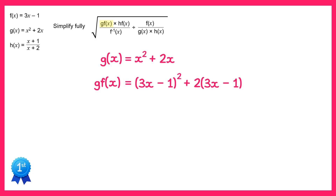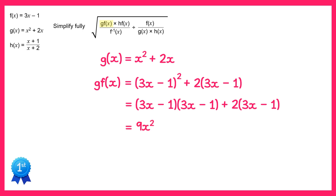3x minus 1, all squared, is just the same bracket repeated twice, so we can expand this bracket. 3x times 3x is 9x squared. 3x times negative 1 is negative 3x. Negative 1 times 3x is negative 3x again. Negative 1 times negative 1 is positive 1. Then we expand the second bracket: 2 lots of 3x is 6x and 2 lots of negative 1 is negative 2.